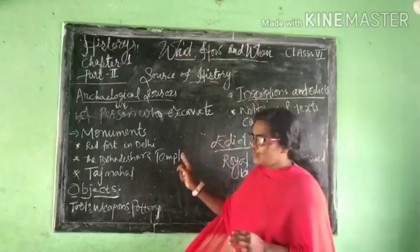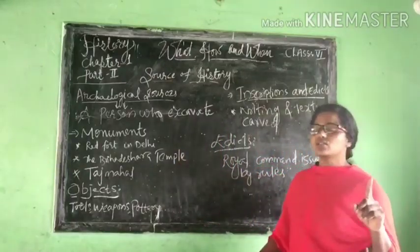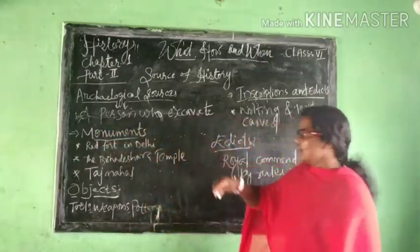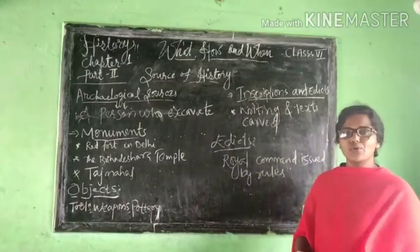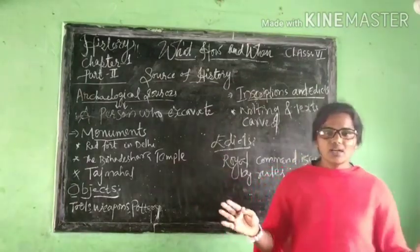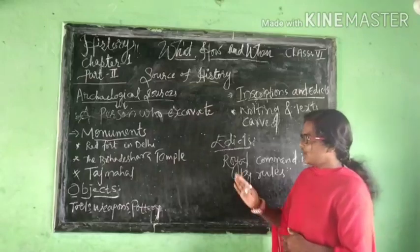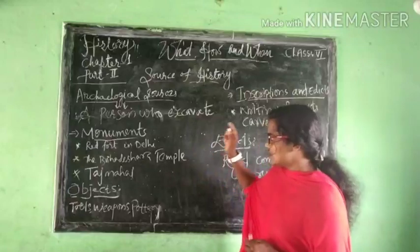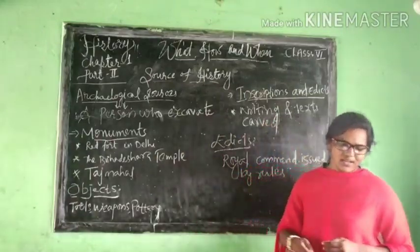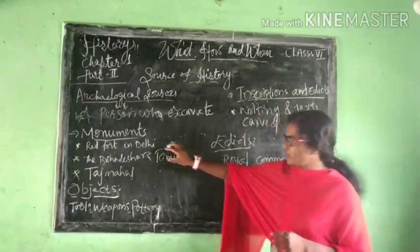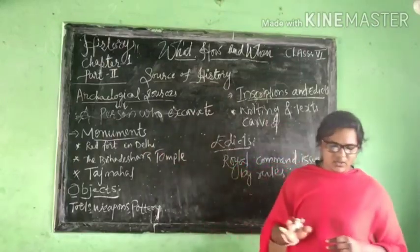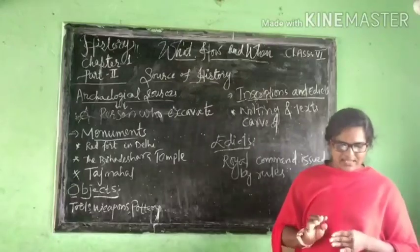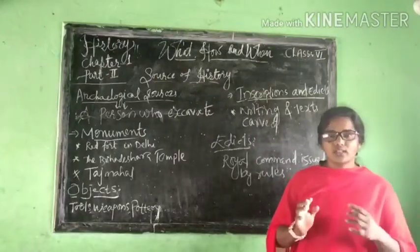We are going to study about the first archaeological source: monument. What is a monument? Monuments are old buildings. Among the old buildings, there are some names mentioned here — Red Fort in Delhi, the Brihadeshwara Temple, and Taj Mahal. These monuments — buildings, forts, palaces, temples, tombs — were built by the rulers.